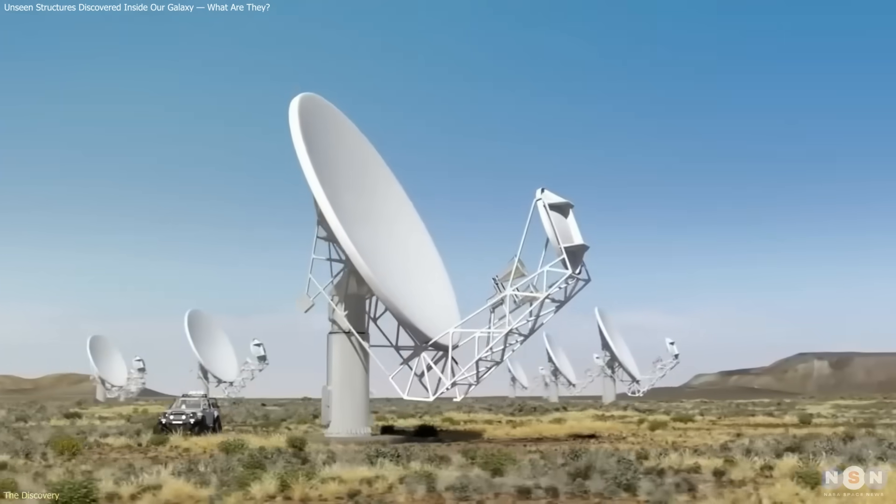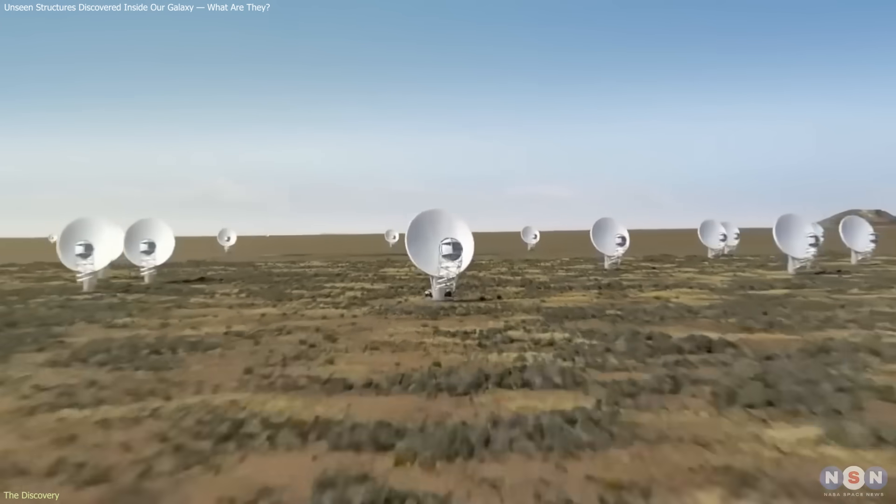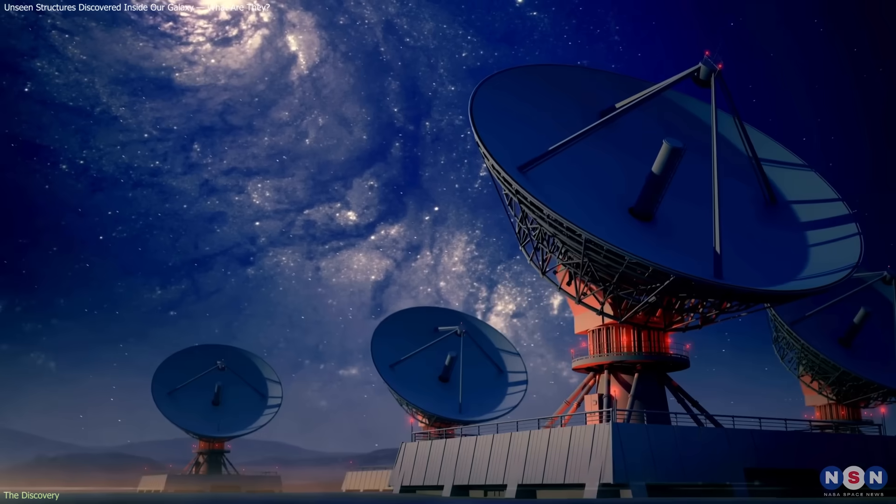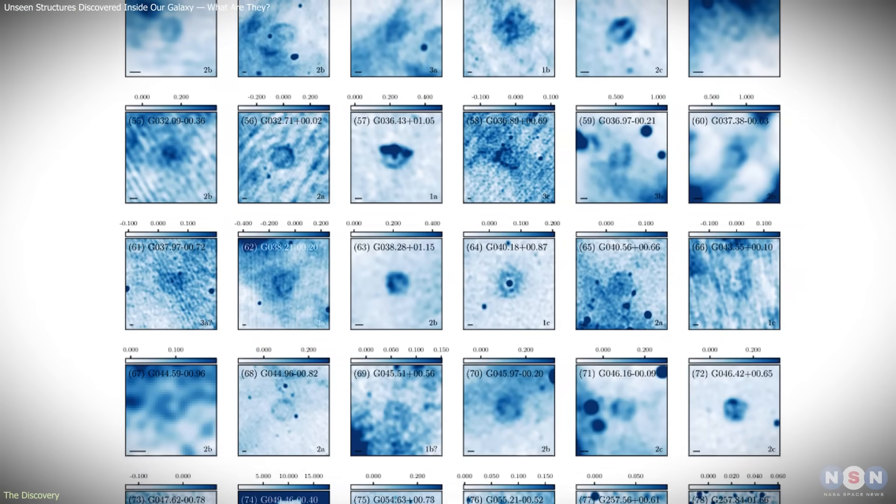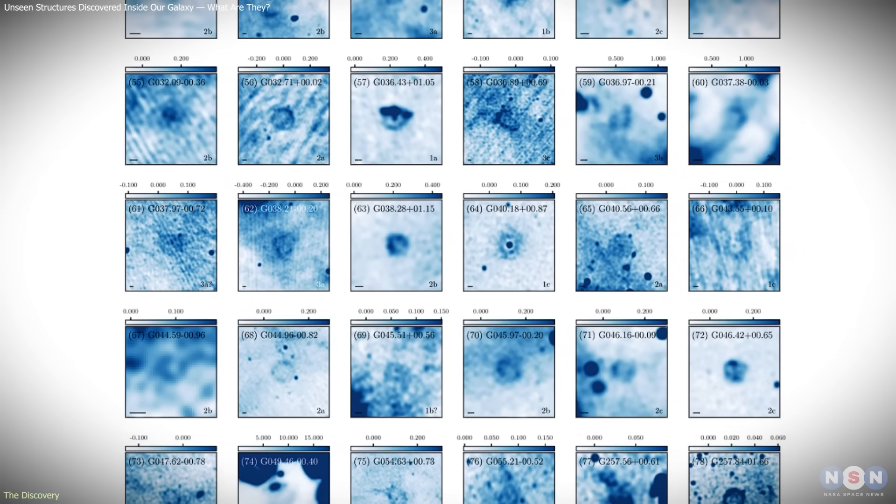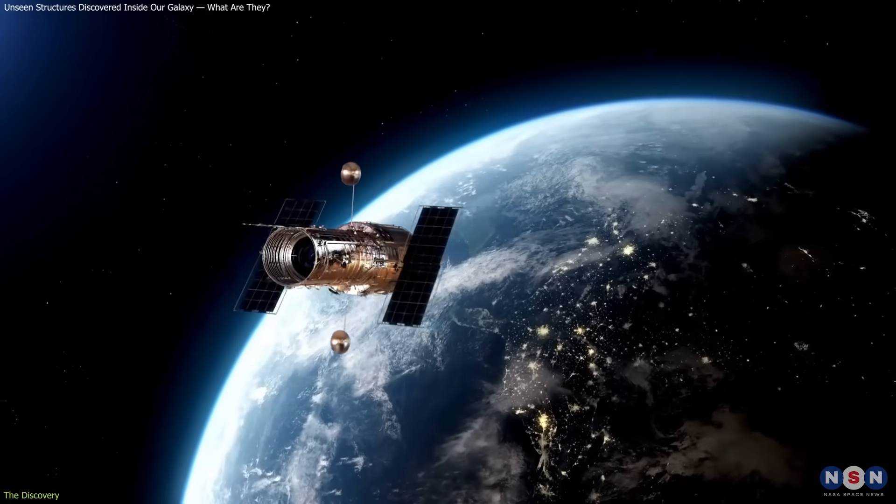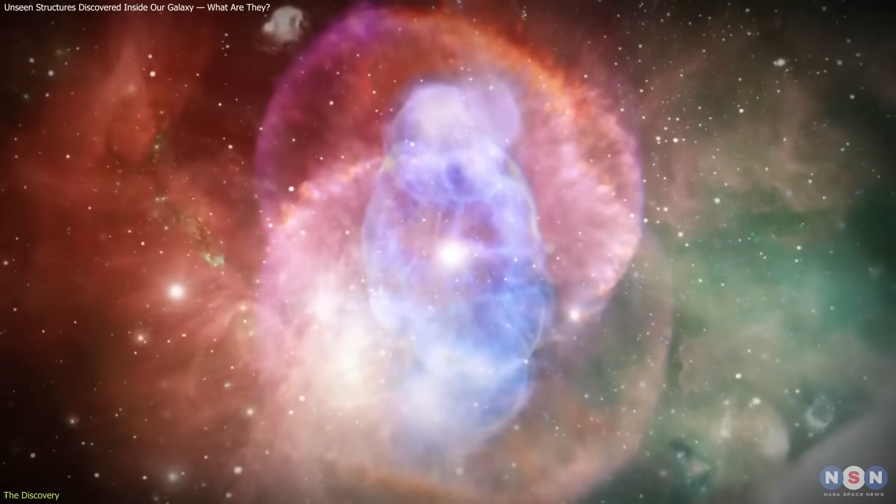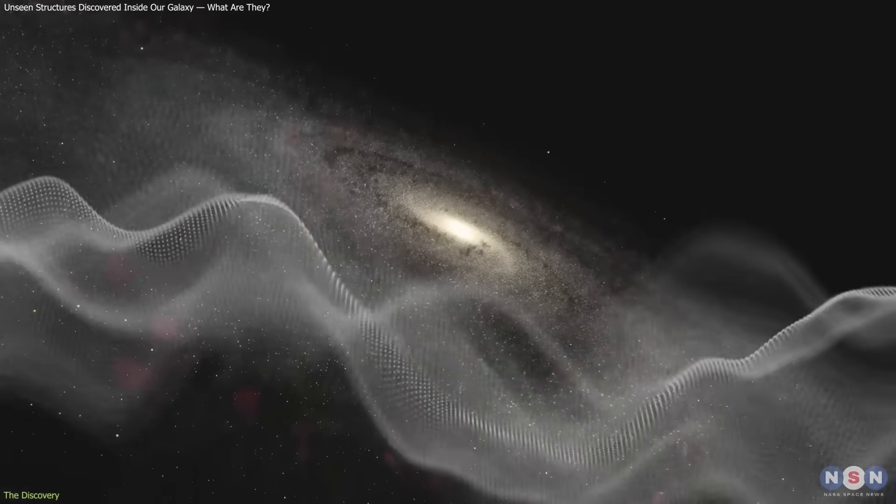The story begins with Meerkat, a network of 64 radio antennas operating at 1.3 GHz. During a survey of the galactic plane, it picked up 164 compact, ring-shaped radio sources that had escaped detection in optical and infrared surveys. Why hadn't we seen them before? Interstellar dust blocks visible and infrared light.